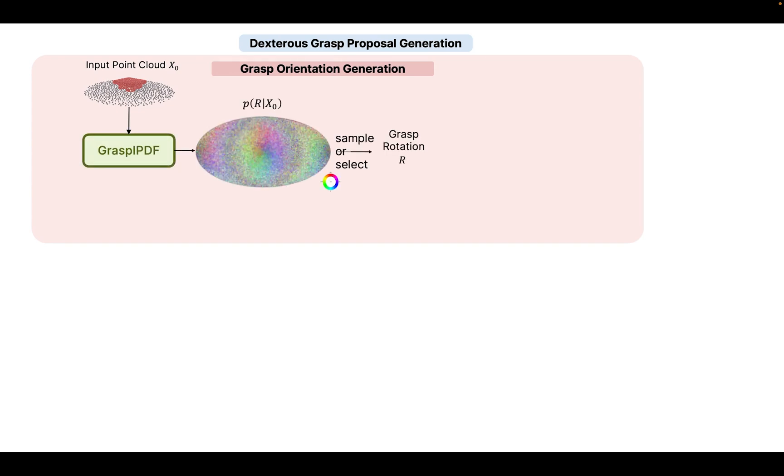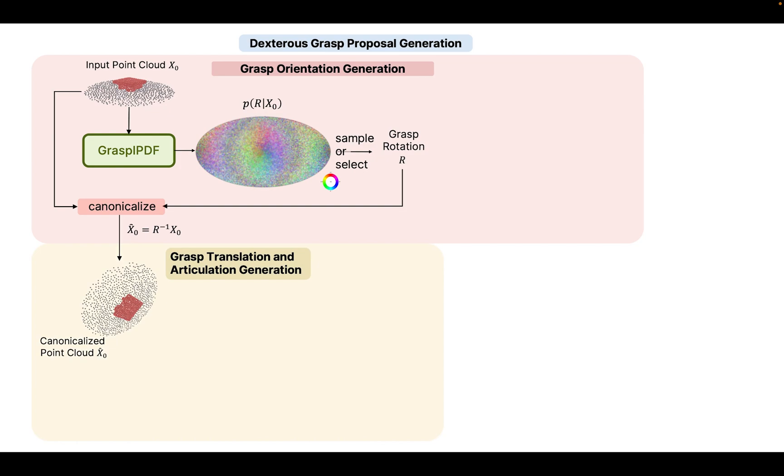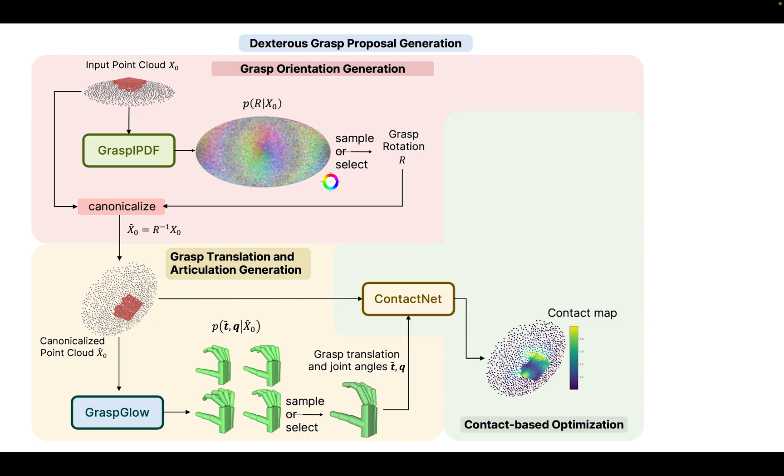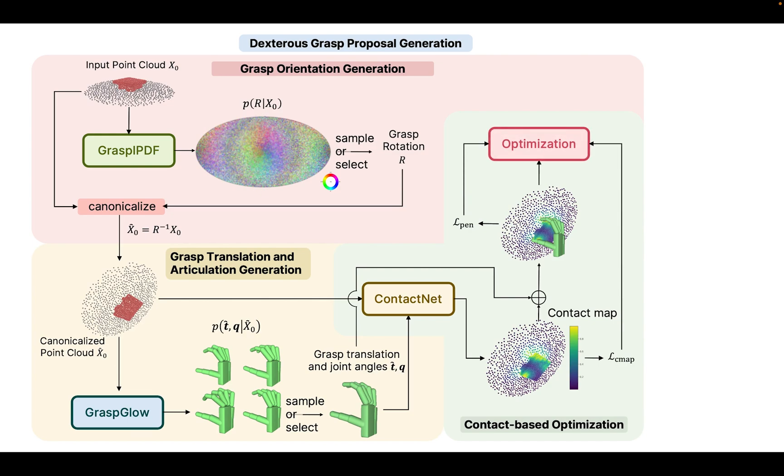The first stage of our method is dexterous grasp proposal generation. Given an input point cloud, we first model the rotation distribution with grasp IPDF. Then, we use a rotation sampled or selected from the distribution to rotate the point cloud, so that the hand can grasp it with the translation and articulation state generated in the next step. After sampling or selecting a hand pose from the distribution, we design a contact-based optimization module to refine the pose. Finally, we apply the inverse rotation to both the point cloud and the hand pose, so that they align with our observation.